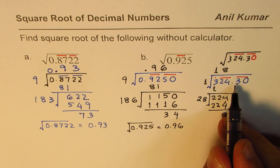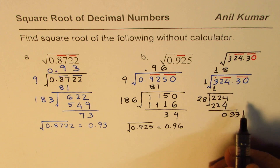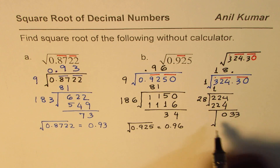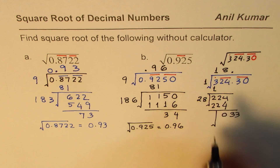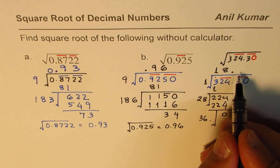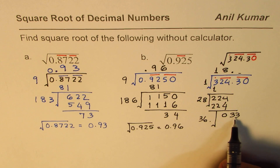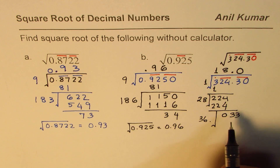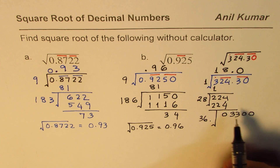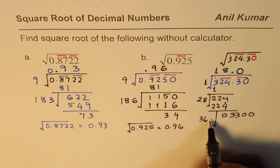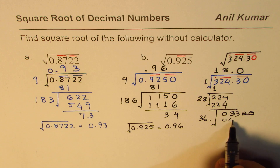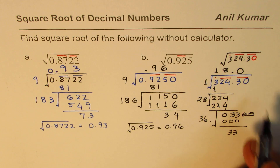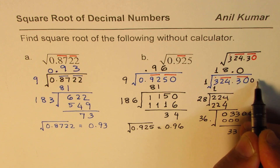The remainder is 0 and now we bring down 30. Since we brought down a number after the decimal we place a decimal point in the quotient. Dividing by twice 18, which is 36, we get 36 here. The next digit should be 0, so we put 0 in the quotient. The difference is 30, and we can bring down two more zeros to continue. Putting 0 gives zero here and the difference becomes 300.